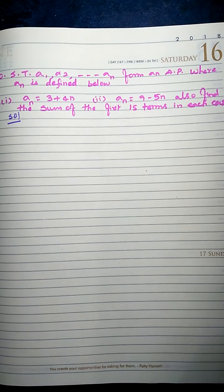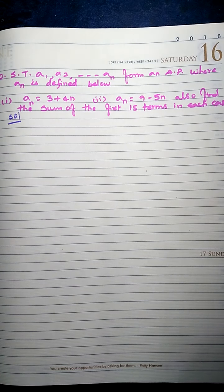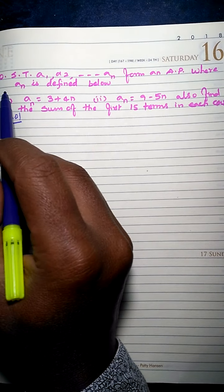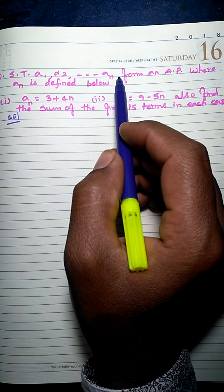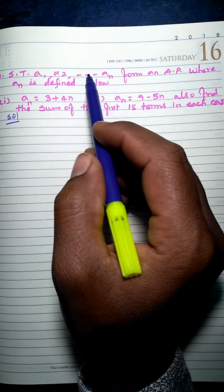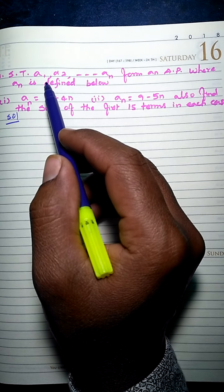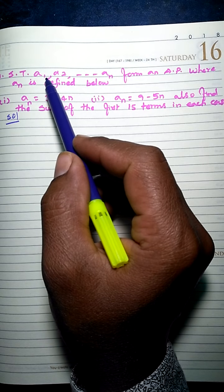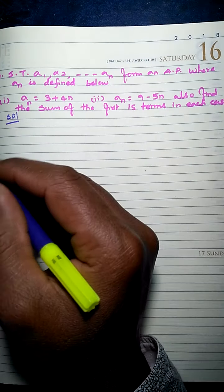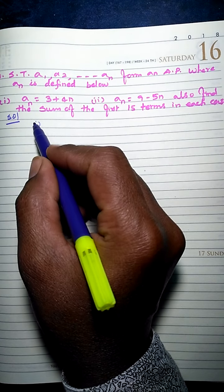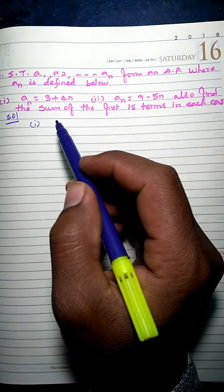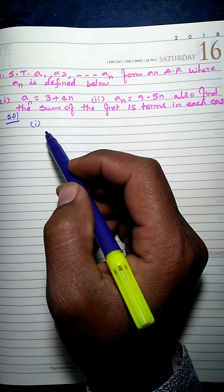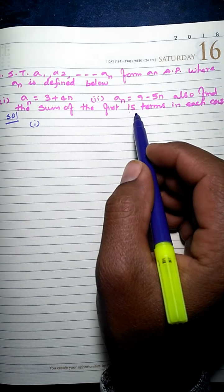Hello students, welcome back to Prakash ABC. Today we will see question number 10. In question number 10 there are two options, so we are going to discuss both options. First, read the question: show that a1, a2, up to aₙ forms an AP where aₙ is defined in two cases. We also have to find the sum of the first 15 terms in each case.